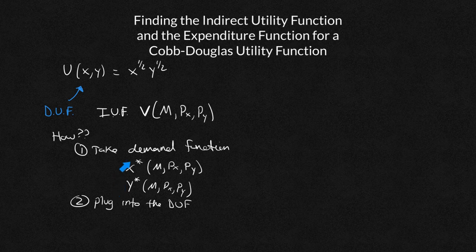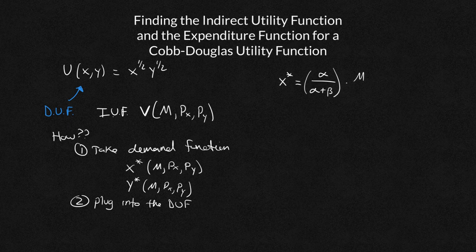Now, this video is not going to solve for the demand function because I already did that in the video for Cobb-Douglas. Again, you can go ahead and watch that video up here as well. So I'm just going to state them. x star for Cobb-Douglas is always going to be alpha over alpha plus beta multiplied by M over Px. So in our case, because my alpha is 1 half and my beta is 1 half, this is going to be 1 half over 1. We're going to get 1 half times M over Px.